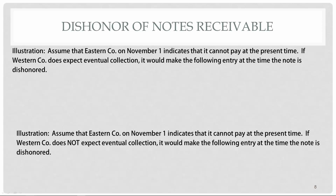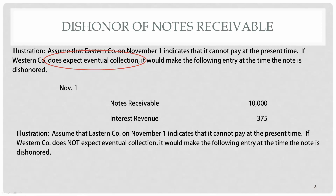What if the note is dishonored and Eastern Company indicates they cannot pay? If Western Company does expect to collect eventually, we still must do a journal entry because the note is no longer valid. We credit notes receivable to remove it, record the interest revenue, and move the whole amount into accounts receivable.